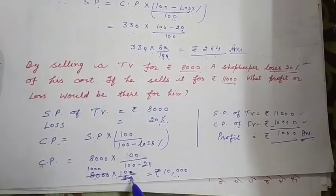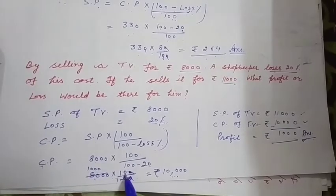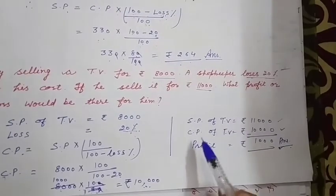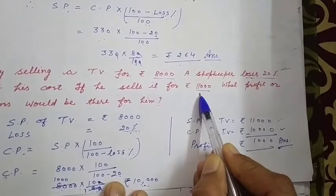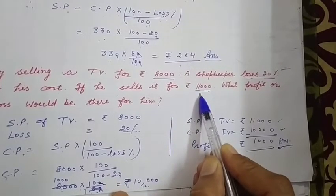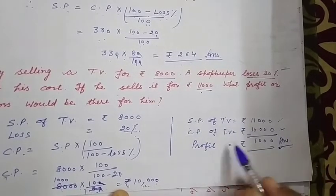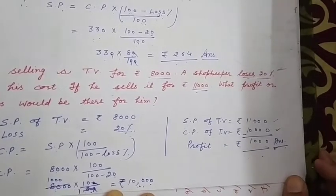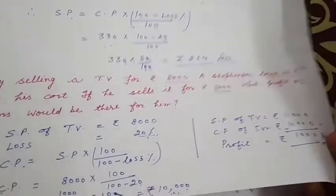10 से 10 cancel होगी: 8,000 ÷ 8 = 1,000, multiply by 10 = ₹10,000 cost price आ गई। अब selling price ₹11,000 है, minus cost price ₹10,000 — तो ₹1,000 profit हो जाएगा क्योंकि selling price ज़्यादा है।